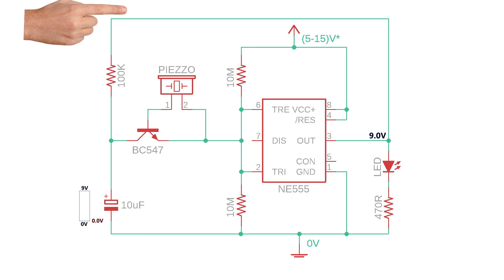After this the 10 microfarad capacitor charges through the 100 kiloohm resistor and the output pin so the next time you tap on the Piezo sensor pin 6 detects more than 2 thirds of supply voltage and turns off the output. Then the capacitor discharges completely and so we can repeat this process again and again.